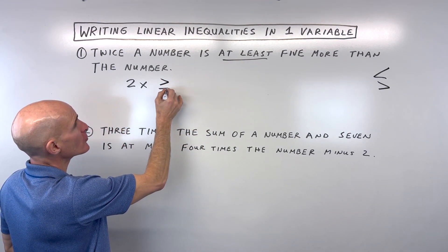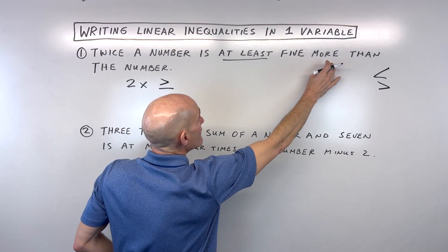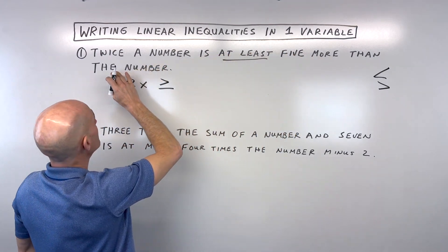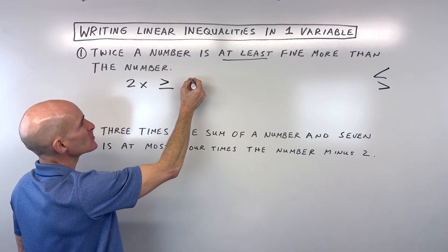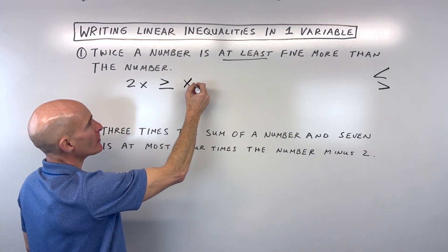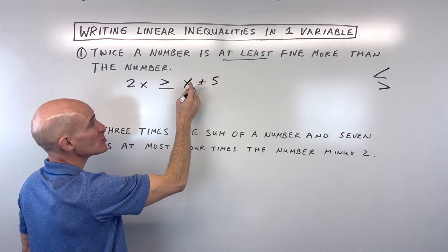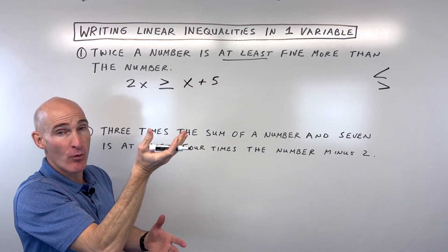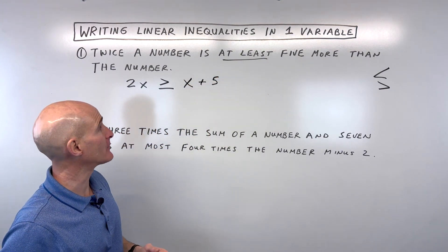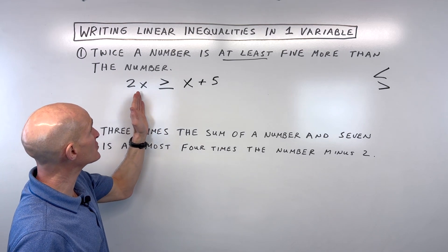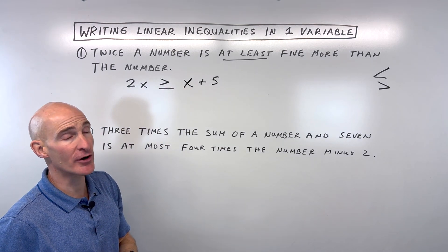So we're going to say greater than or equal to five more than the number. 'Five more than' means we're taking the number and adding five to it. So now we have our linear inequality in one variable: 2x ≥ x + 5.